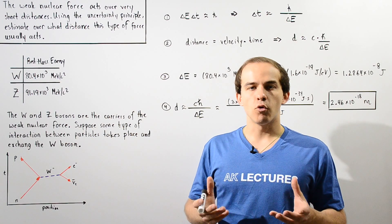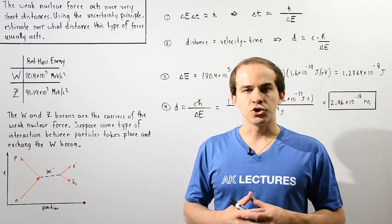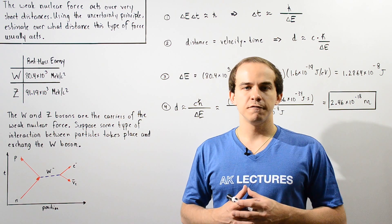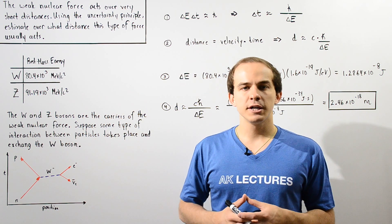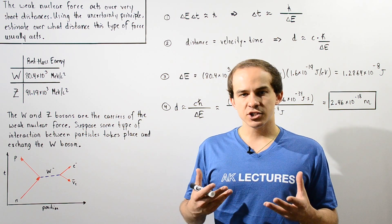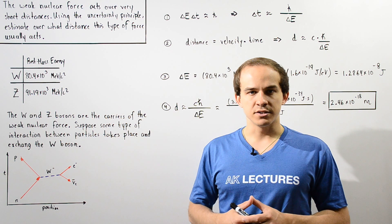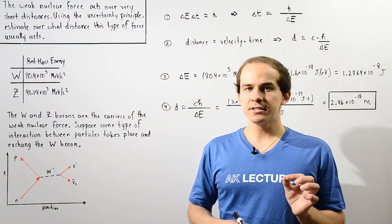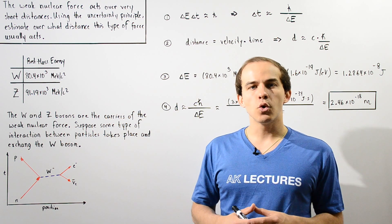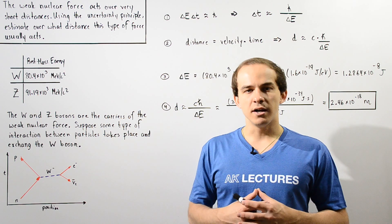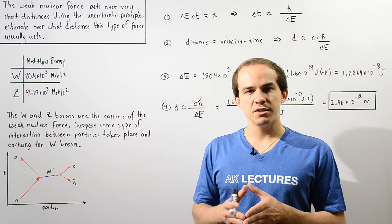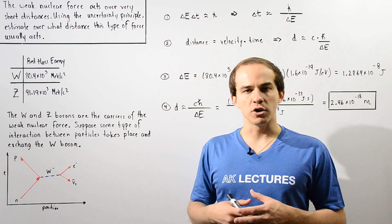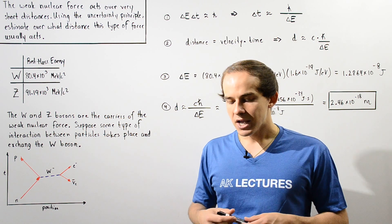There are four different types of forces in nature, and one of these forces is the weak nuclear force. The weak nuclear force is said to act over a very short distance. In this lecture, we're going to use Heisenberg's uncertainty principle to estimate the distance over which the weak nuclear force acts.